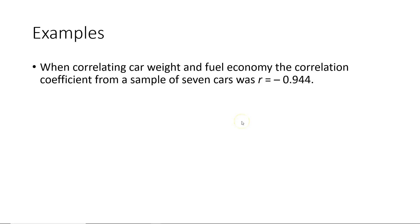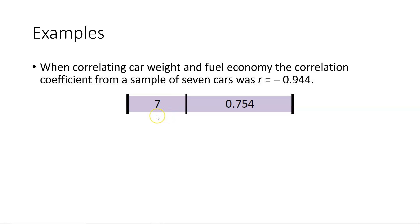In this particular case, when correlating car weight and fuel economy, we find that the correlation coefficient from a sample of seven cars was negative 0.944. We go to Table 4 in the alternate textbook, look for the line corresponding to a sample size of seven cars, and see that the critical value is 0.754. Because the absolute value of our correlation coefficient from the sample is larger than the critical value, we would say there is a significant linear correlation between the two variables.